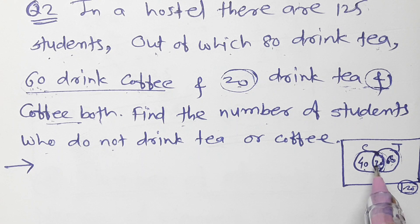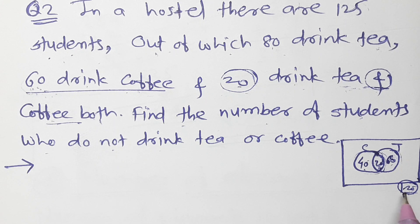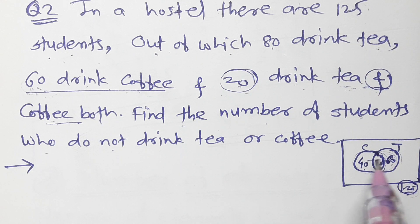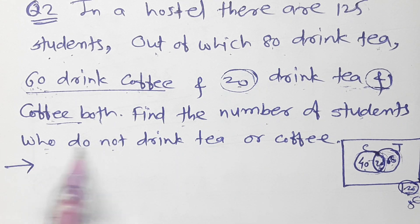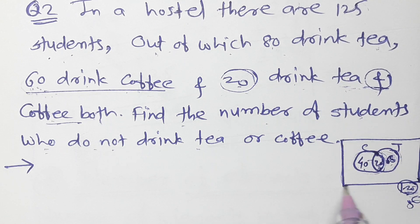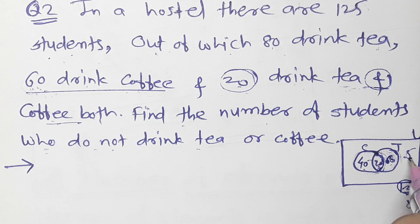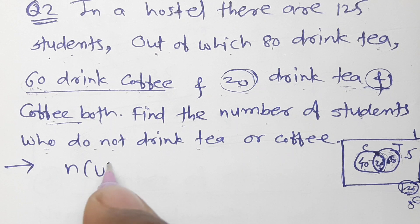So 120 students drink at least one of tea or coffee. Total is 125, and those who drink at least one is 120. So 125 minus 120 equals 5 students who do not drink tea or coffee.